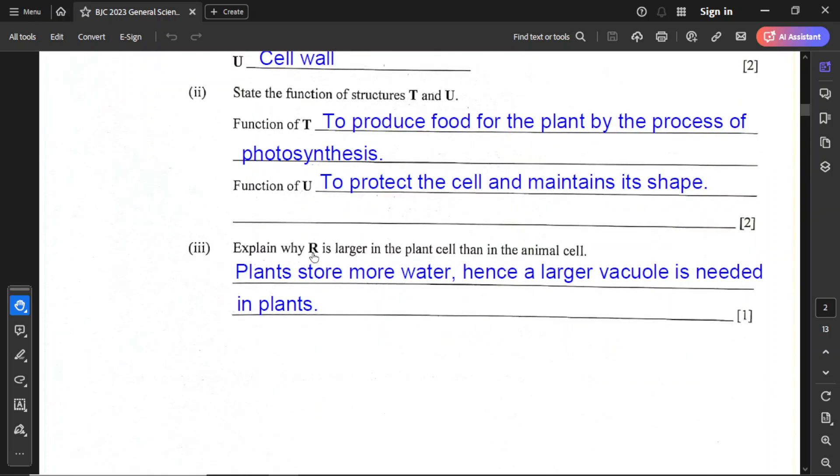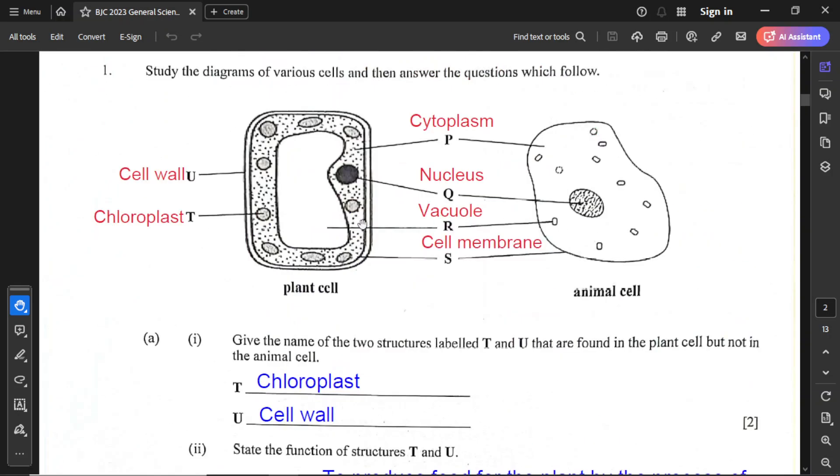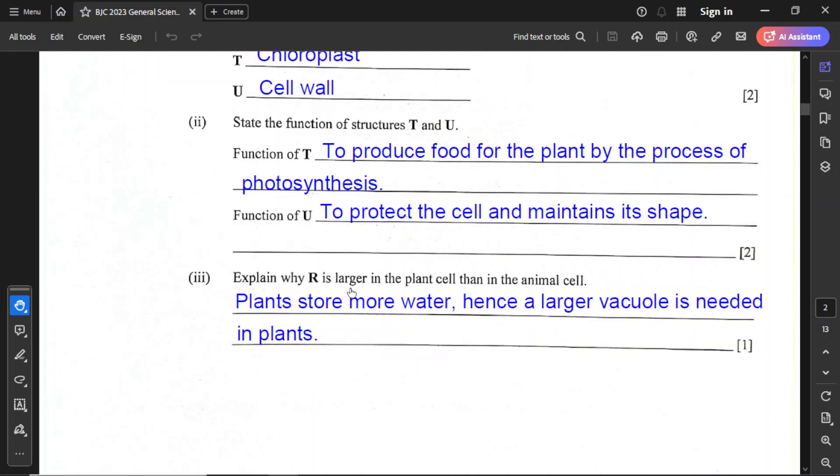For part 3, explain why R is larger in plant cells than in animal cells. Just to remind you that R is the vacuole. The thing is that plants store more water, hence they require a larger vacuole. You need to know that vacuole is used to store water, food, and waste.